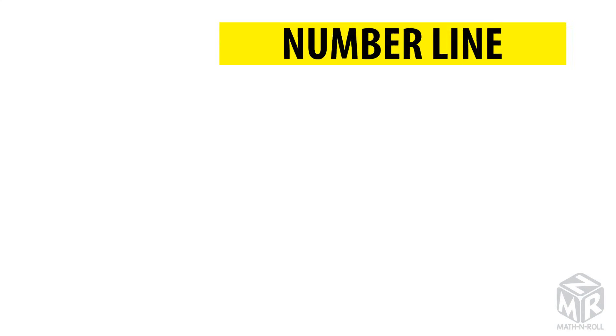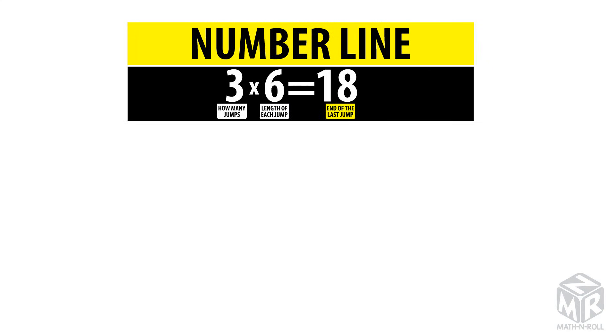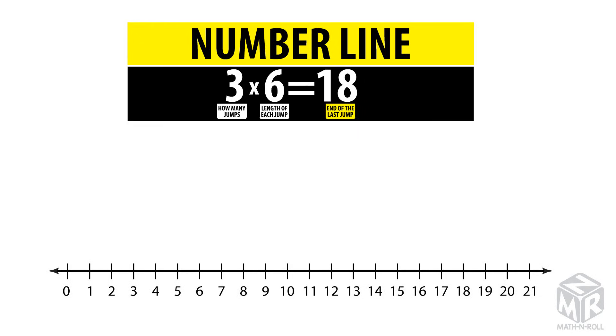The next strategy uses the number line. The first factor tells us how many jumps we're going to make. The second factor tells us the length of each jump.